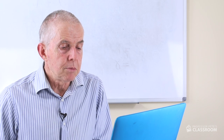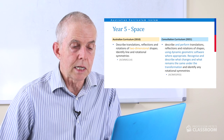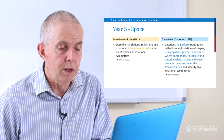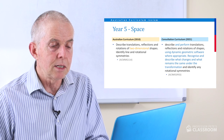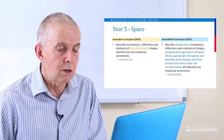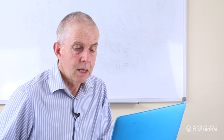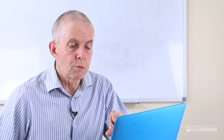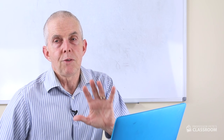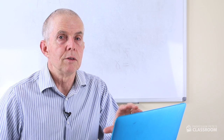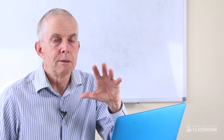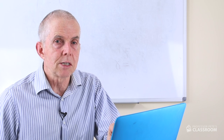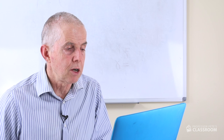Year 5, space number three: describe and perform translations, reflections and rotations of shapes using dynamic geometric software where appropriate. Recognise and describe what changes and what remains the same under the transformation, and identify any rotational symmetries. Well done, well written — lots of useful language. I like this phrase: 'recognise and describe what changes and what remains the same.' That's an important mathematical analysis of a transformation. The transformations are mainly visual and geometric, but including recognising and describing what's changed and what hasn't changed adds another aspect to this study which is very powerful and very useful.